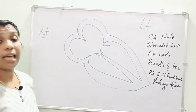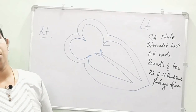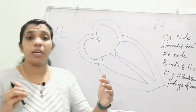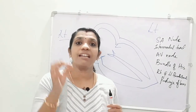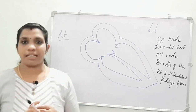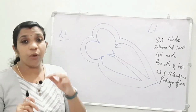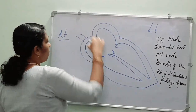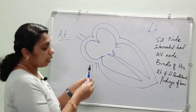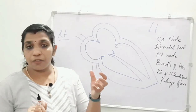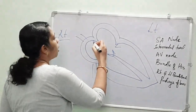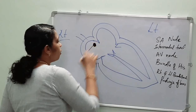The most important component is the SA node, also known as the sinoatrial node or sinus node. This SA node is situated in the right atrium, on the superior surface of the posterolateral aspect, just below and lateral to the opening of the superior vena cava. So this SA node is situated here on the diagram.